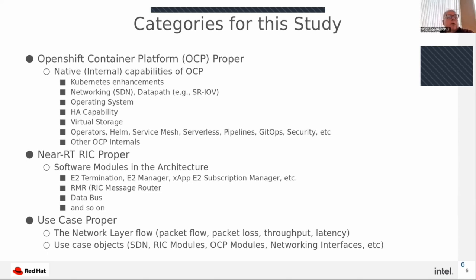Of particular interest is putting it all together in an end-to-end use case. We'll likely look at proactive maintenance use cases where there's anomaly detection in the RAN, followed by traffic steering to move UEs away from the anomaly. We'll study the network layer flow — packet flow, packet loss, throughput, and latency — as well as the impact on objects like the SDN controller, the RIC modules, OCP modules, and network interfaces.